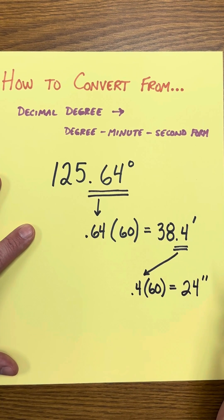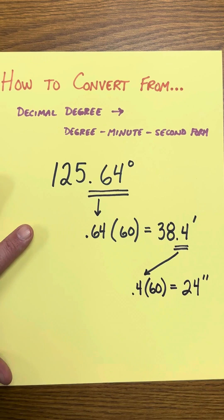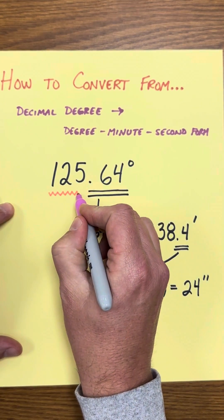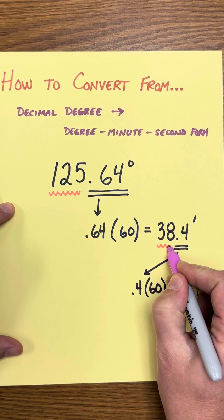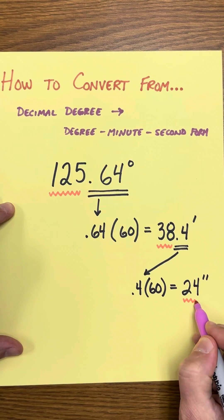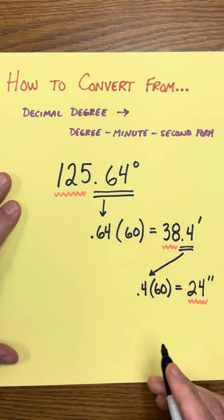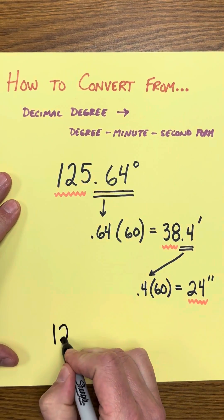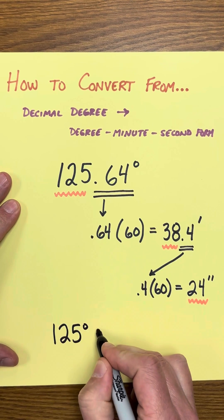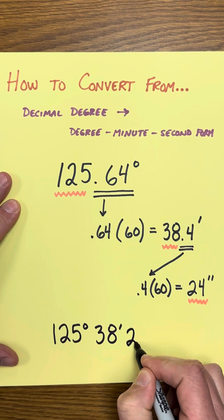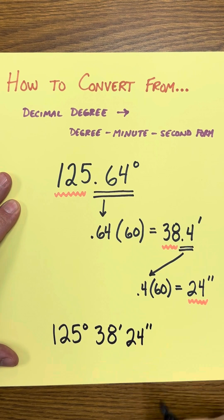If we put this together, we're going to combine these parts: 125 degrees, 38 minutes, and 24 seconds. Our answer is 125 degrees 38 minutes and 24 seconds.